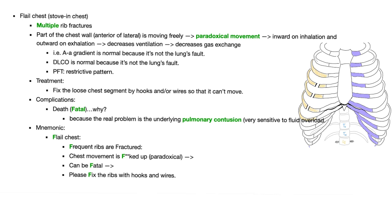Normally when I inhale, my chest wall should expand outwards, but this area is expanding inwards. When I exhale, normally I should expand inward, but now this area is expanding outward. So I have paradoxical movement in the same person. This will decrease ventilation and decrease gas exchange.